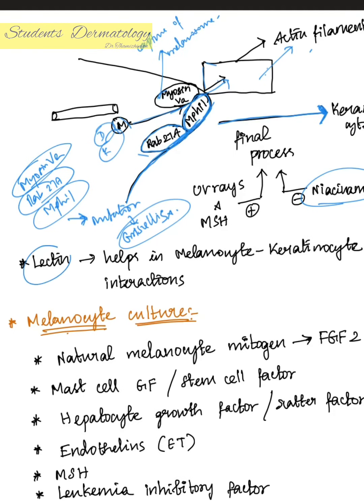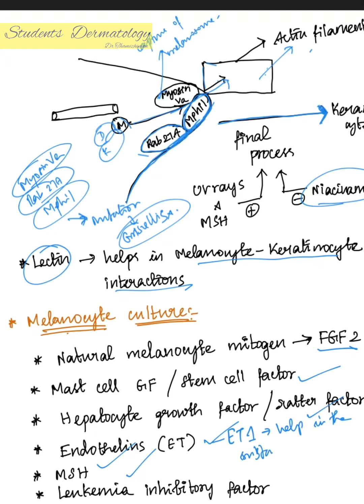Lectin helps in melanocyte-keratinocyte interactions. Regarding melanocyte culture: normally melanocytes cannot be cultured, but certain natural mitogens help — including fibroblast growth factor 2, mast cell growth factor (stem cell factor), hepatocyte growth factor (scatter factor), endothelins, melanocyte-stimulating hormone, and leukemia inhibitory factor. Endothelin-1 in particular helps in the sustainability of melanocytes.